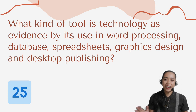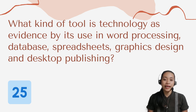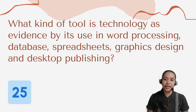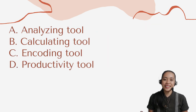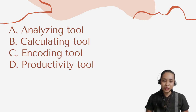And for our last question — number 25 — what kind of tool is technology, as evidenced by its use in word processing, database, spreadsheets, graphic design, and desktop publishing? Letter A: Analyzing tool. B: Calculating tool. C: Encoding tool. Or letter D: Productivity tool.